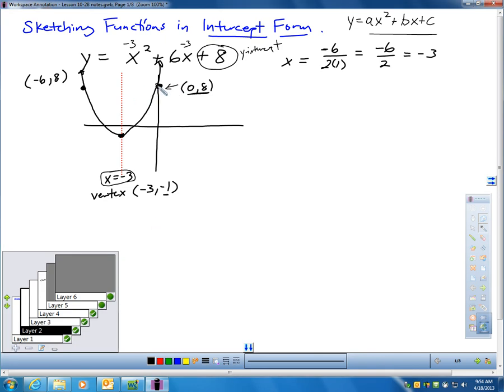Since 0, 8 is one of the points on my graph, I can mirror that point over here, which is 3 from 0 to negative 3. If I go 3 more left, I'm at negative 6, negative 8. And I'd have my sketch, and of course, this would have a minimum value of negative 3.